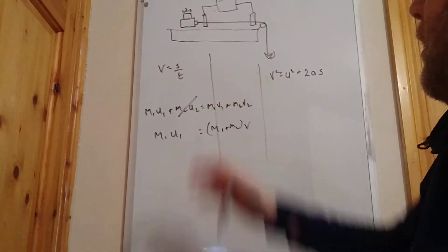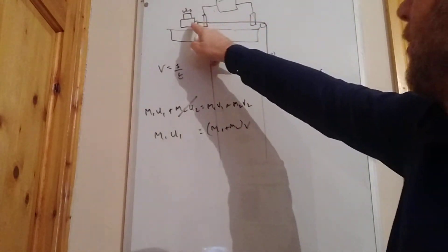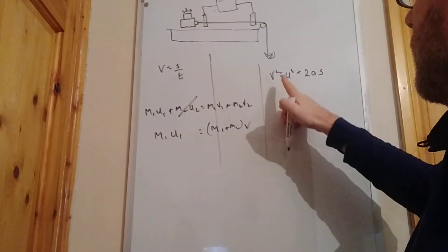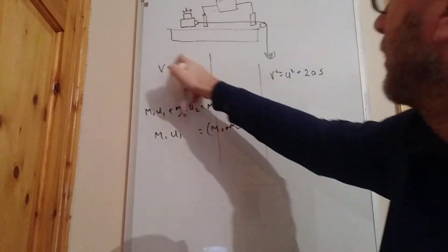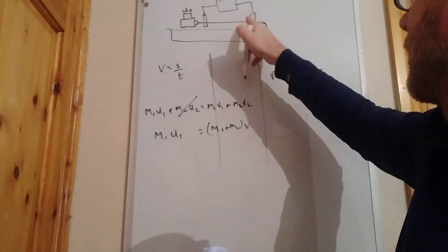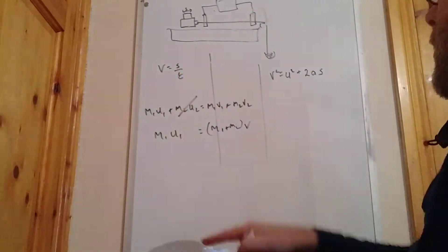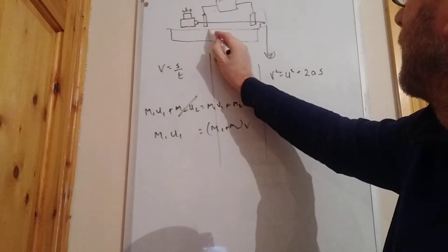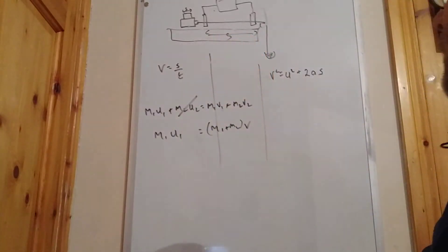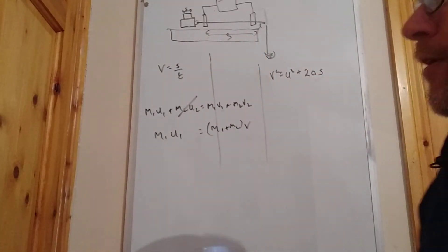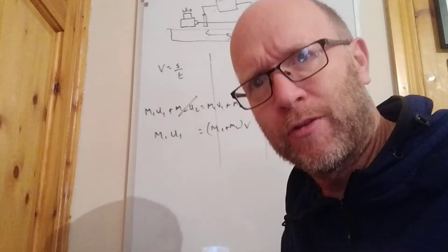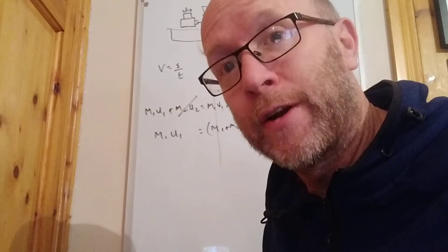We have a weight here; it doesn't matter what the weight is. System set up like that, let it go, this accelerates through here. You measure the initial velocity as we did over here, you measure the final velocity as we did here, you measure the distance between here and here, and you have your acceleration.